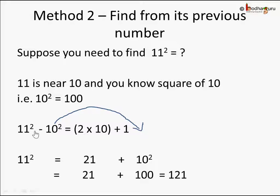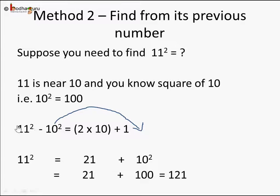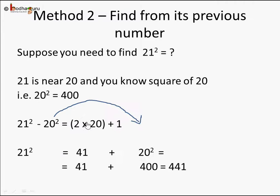Here is the rule: 11 squared minus 10 squared equals 2 times the previous number (10) plus 1. So 11 squared minus 10 squared equals 2 times 10 plus 1. To find 11 squared, move the 10 squared to the other side. That gives 11 squared equals 2 times 10 (which is 20) plus 1, which is 21, plus 10 squared (100). So 11 squared equals 121.